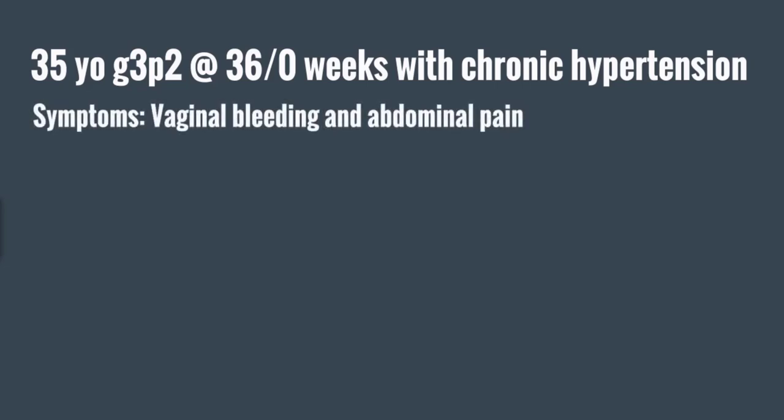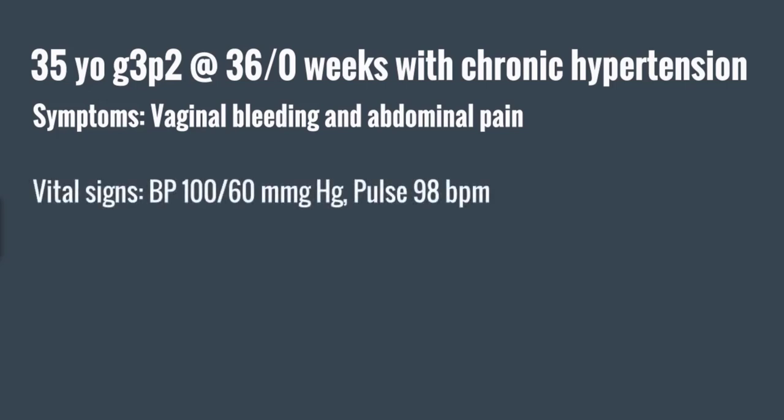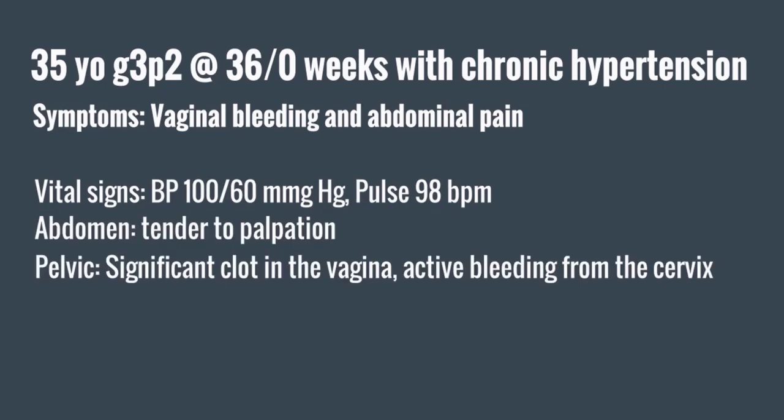She presents with vaginal bleeding and abdominal pain to labor and delivery. On exam, vital signs are notable for blood pressure of 100 over 60, pulse of 98. Abdomen is tender to palpation, and on pelvic exam, there is significant clot in the vagina with active bleeding from the cervix.